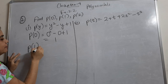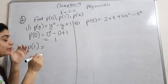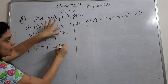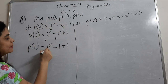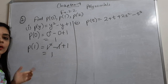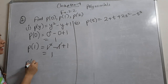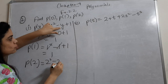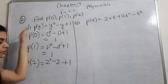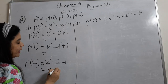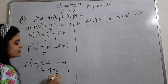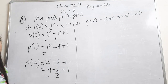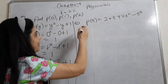p(1) is equal to 1² minus 1 plus 1, so the 1s cancel out, giving 1. Now p(2): put 2 here, so 4 minus 2 plus 1, that is 3. So 4 minus 2 is 2, plus 1 is 3. So this is my first part done.